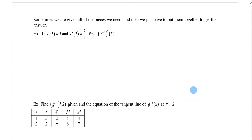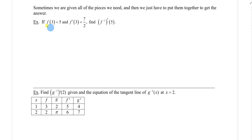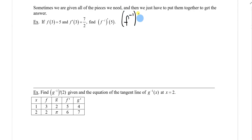In the second example, we are given a function value and the derivative at that point, and we're asked to find the inverse derivative at a particular point. Sometimes we are given all the pieces we need and we just have to put them together. Using the formula: f inverse prime of five equals one over f prime of f inverse of five.